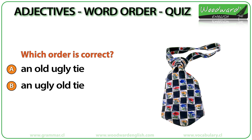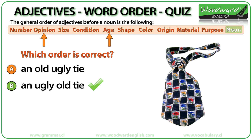An ugly old tie. Ugly is an opinion, old refers to age, and opinion comes before age.